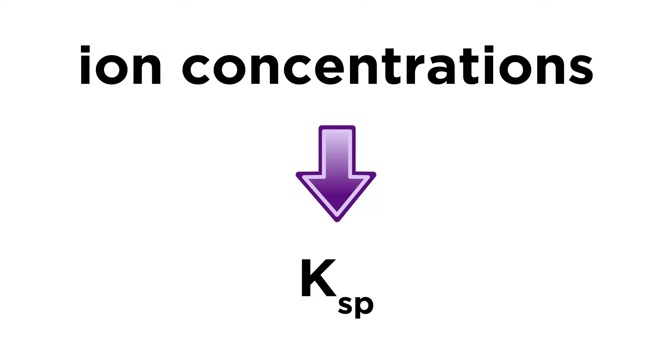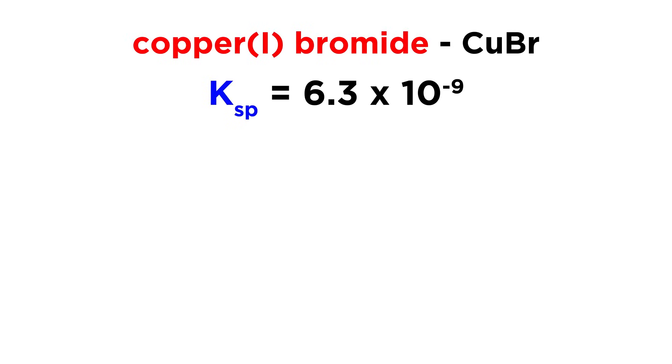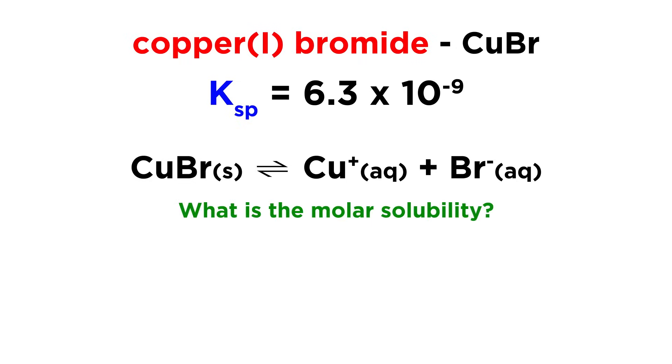We can also go the other way around and predict the concentrations of ions that will result in solution when dissolving a substance with a given Ksp. Let's say we place copper 1 bromide, which has a Ksp of 6.3 times 10 to the negative 9, in aqueous solution, which will then generate copper ions and bromide ions to some extent. What will be the molar solubility of this substance, meaning how many moles per liter of the formula unit will dissolve?